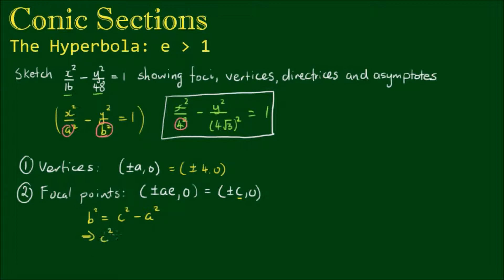Now b² is equal to the number 48. And a² is equal to 16. So these added together give 64, which we can express as 8². So we conclude that c is equal to 8. And thus the focal points are given by (±8, 0).